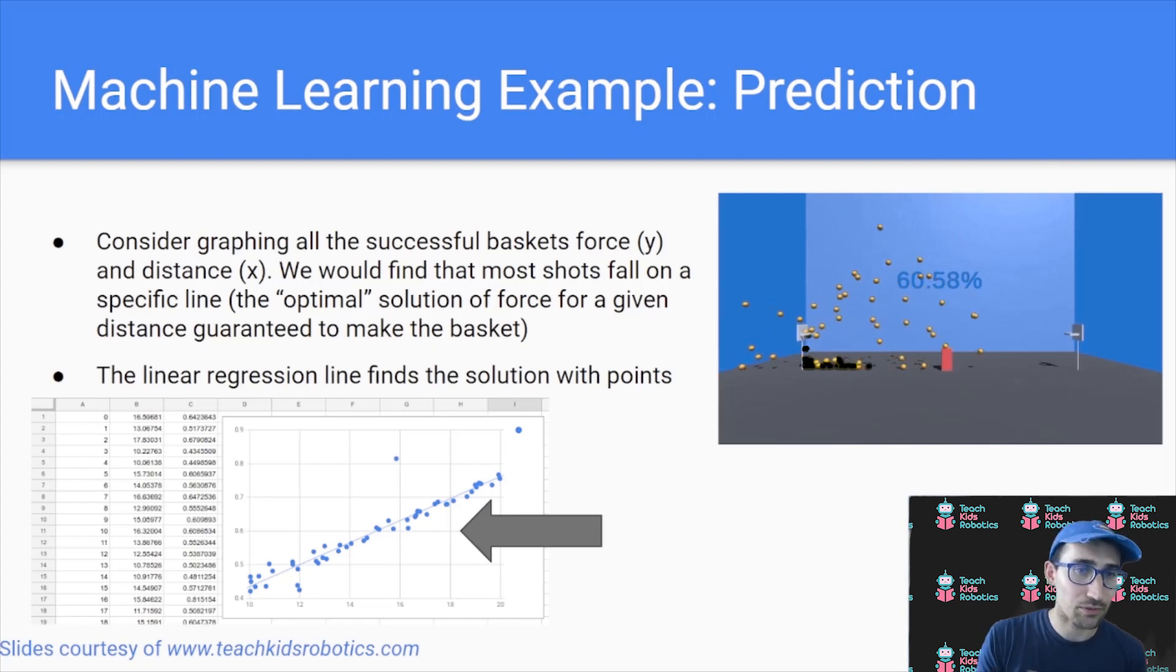And this line is what we consider the optimal solution. Think of it as the right answer for any given distance, what the force is that you want to shoot at. And again, the linear regression given these points of when we made a basket is what allows us to find that line.